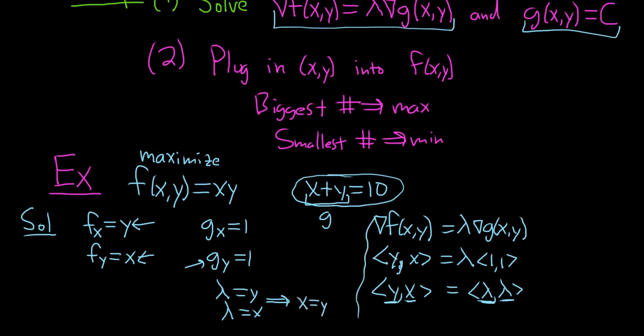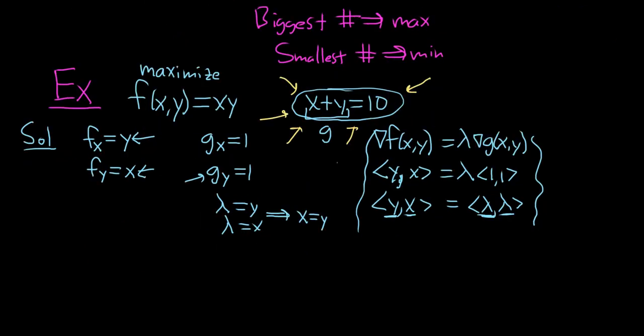We've used this condition, so now, in order to proceed, we have to use our constraint. We're told that x plus y equals 10. We know that x equals y, so we can write that as x plus x equals 10. So 2x equals 10.